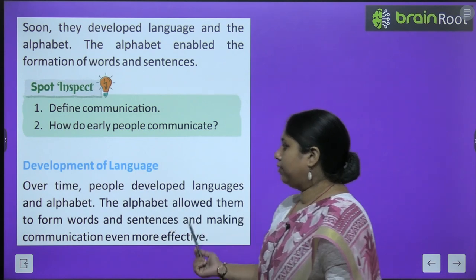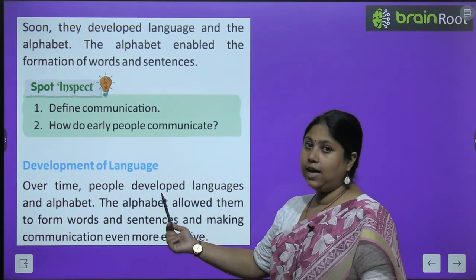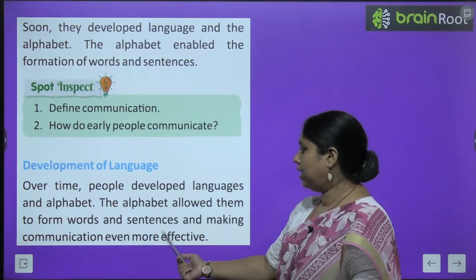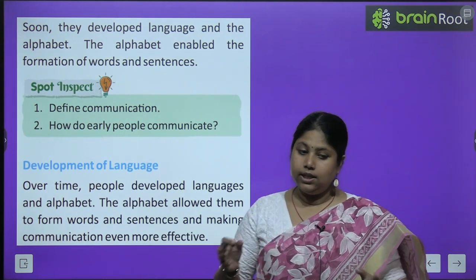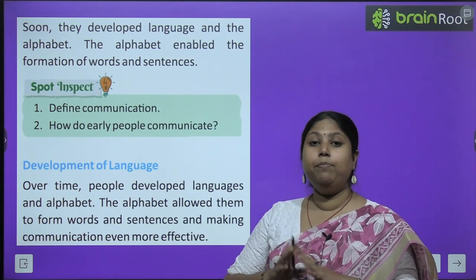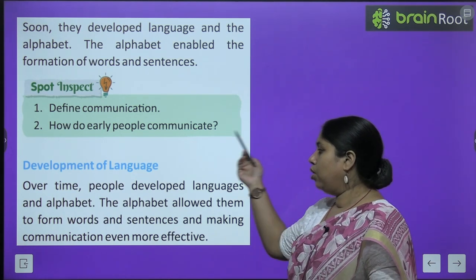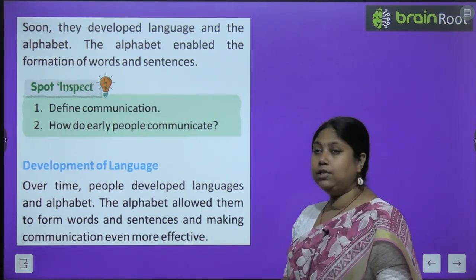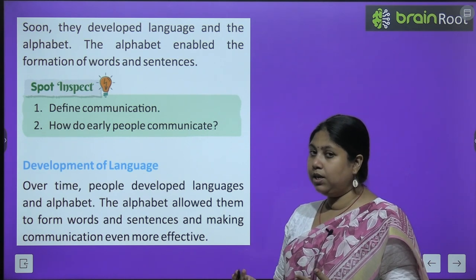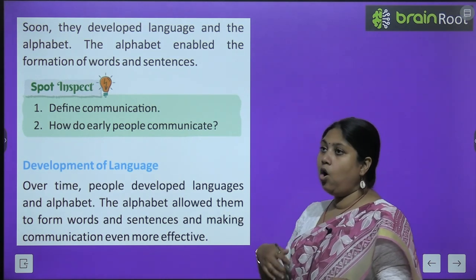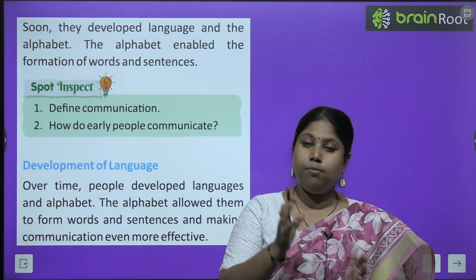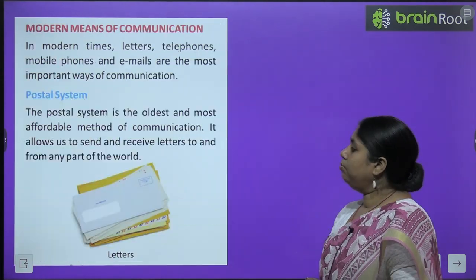Aaj hum easily shabdon se, vaakyon se aur alag-alag bhashaon se apni feelings ko logon tak pahuncha sakte hain. Development of language — over time, people developed languages and alphabets. The alphabet allowed them to form words and sentences, making communication even more effective. Dheere dheere, jaise jaise samay beeta gaya, logon mein progress hoti chali gayi aur unhone language aur alphabets ko develop kiya. Alphabets se words bane, words se dheere-dheere sentences bane.